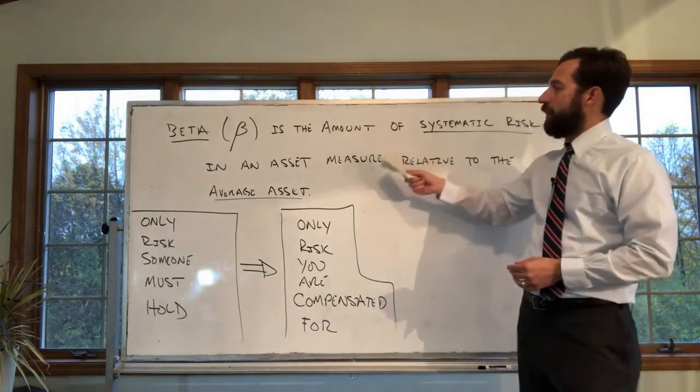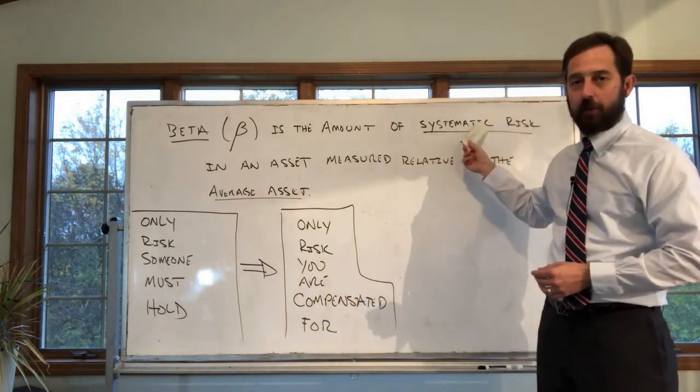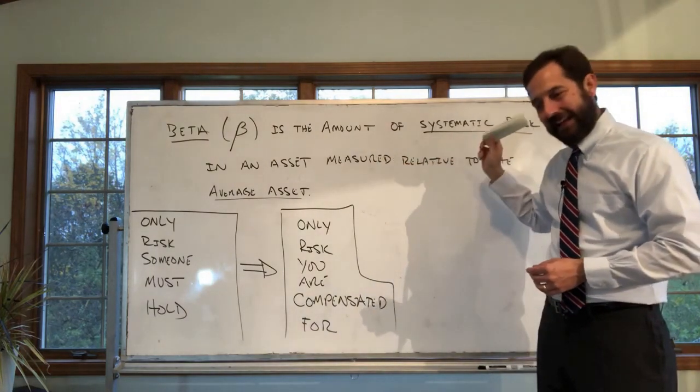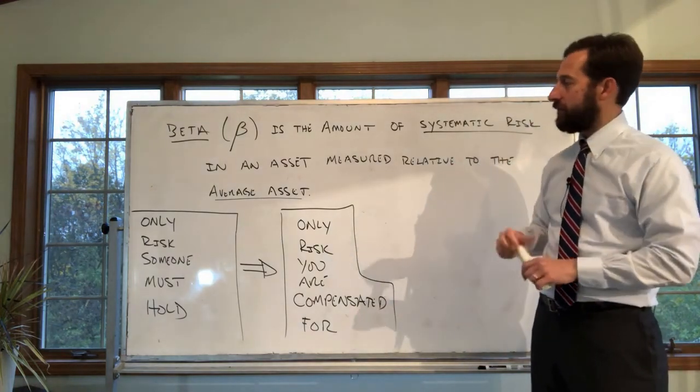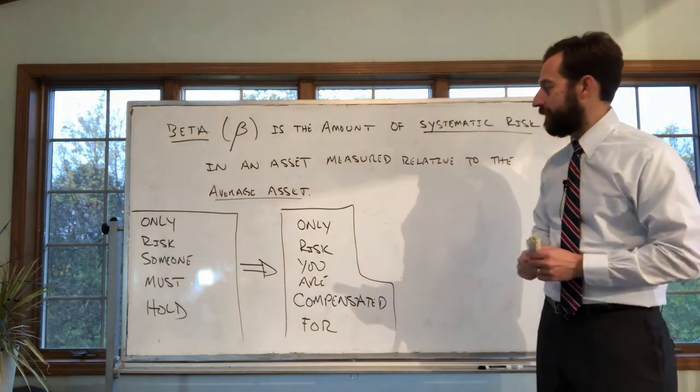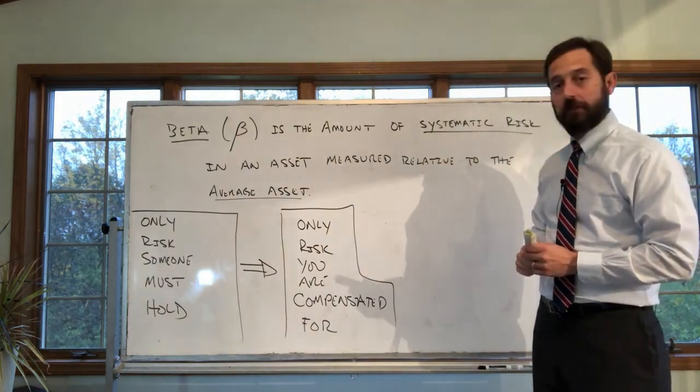In sum, beta measures the risk that someone has to hold, which is to say, the risk that you are compensated for. It measures the amount of risk that you're compensated for in an individual asset. Good. Excellent.